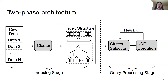Motivated by this idea, we design a two-phase architecture. In the indexing stage, raw data is clustered into an index structure. In the query processing stage, an item from a cluster is sent to the UDF, and the UDF result is sent back to instruct the next selection until meeting the stopping criteria.